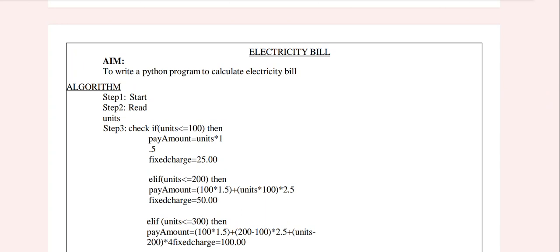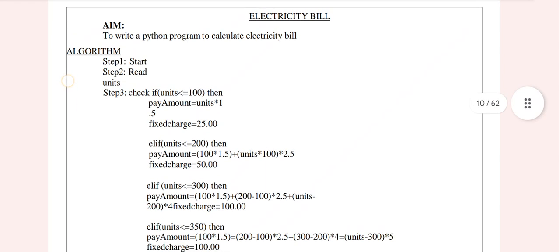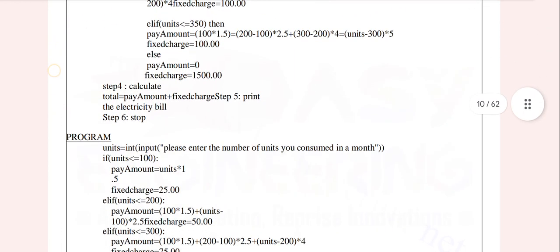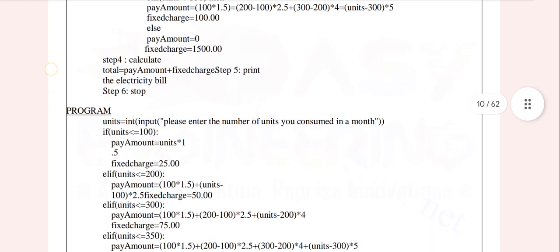Electricity bill — we see how we have the program. That's one algorithm. First is AIM. That's the algorithm.